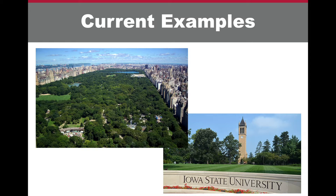Examples of these English style gardens are Central Park in New York City, New York, and Iowa State University's campus in Ames, Iowa. You will find that most universities' campuses have a mid-1700s English style feel. Fun fact: Iowa State University's campus and Central Park were both designed by Frederick Law Olmstead.